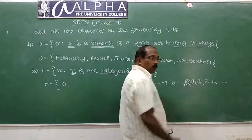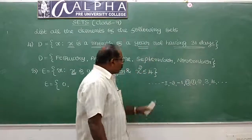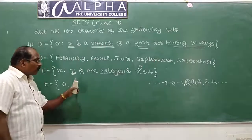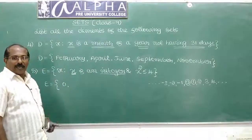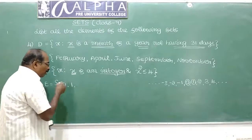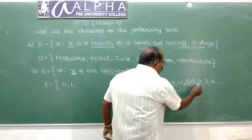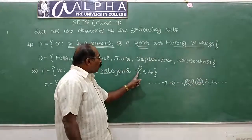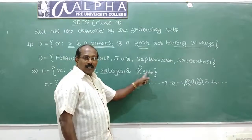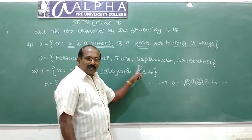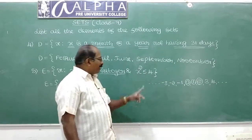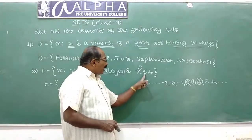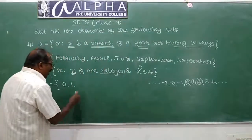We can write 1 also, because 1 squared is 1, which is less than 4. We can write 2 also, because 2 squared is 4, and 4 is equal to 4, which satisfies the condition less than or equal to 4.